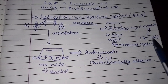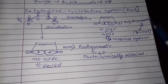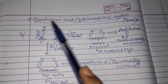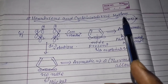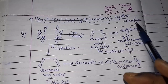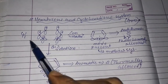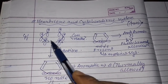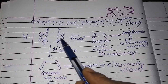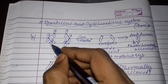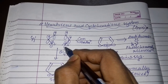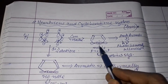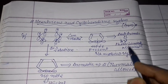Now we come to another example: the hexatriene and cyclohexadiene system, which is a 4n+2 pi electronic system. Here psi-1 looks like this. If we rotate in a conrotatory way, the positive lobe comes here, the positive lobe comes there, and the negative lobe comes to there — we can see the presence of a node, so it is a Möbius system.